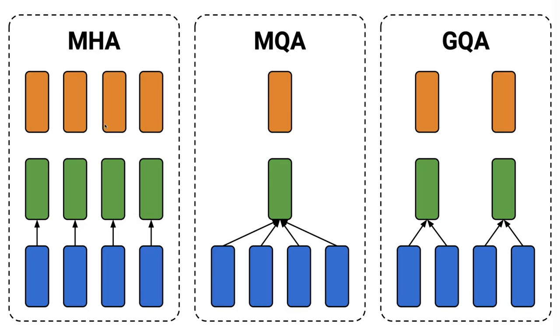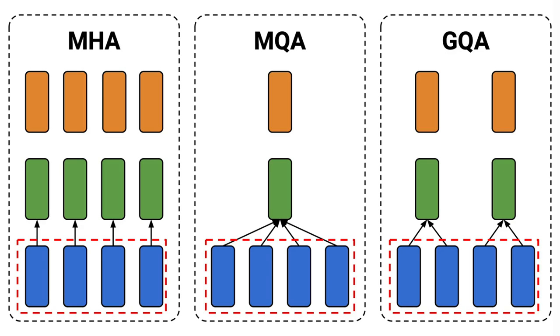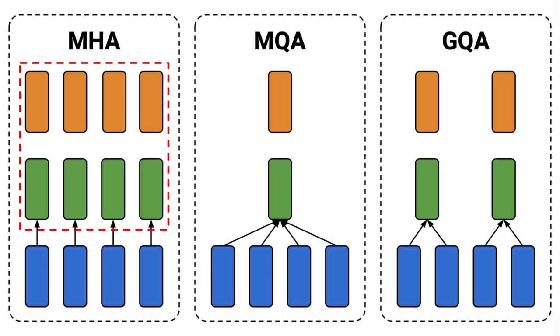Now, let's put these three methods side by side and let's compare them. So, we have the same number of queries in all three cases, h, but a different number of keys and values. In the multi-head attention, we have a key and the value for each head.